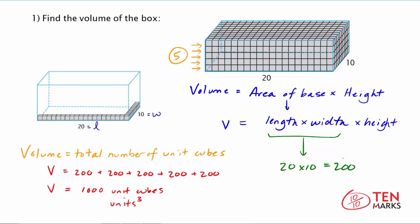Now we want to multiply this value times the height. So volume equals 200. Now the height is 5 cubes because you counted 5 layers. So 200 times 5. And here the volume works out to be 1,000. And this is 1,000 unit cubes.